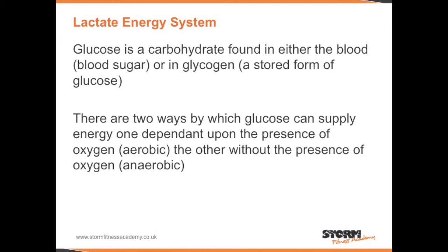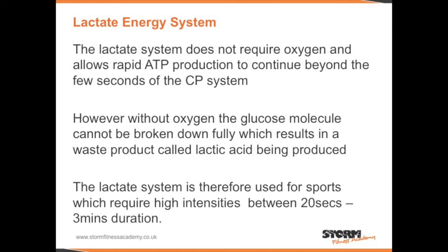The lactate energy system. Glucose is a carbohydrate found in either the blood, known as blood sugar, or in glycogen, which is a stored form of glucose. There are two ways by which glucose can supply energy: one is dependent upon the presence of oxygen, known as aerobic; the other, without the presence of oxygen, known as anaerobic. The lactate system does not require oxygen and allows rapid ATP production to continue beyond the few seconds of the CP system.